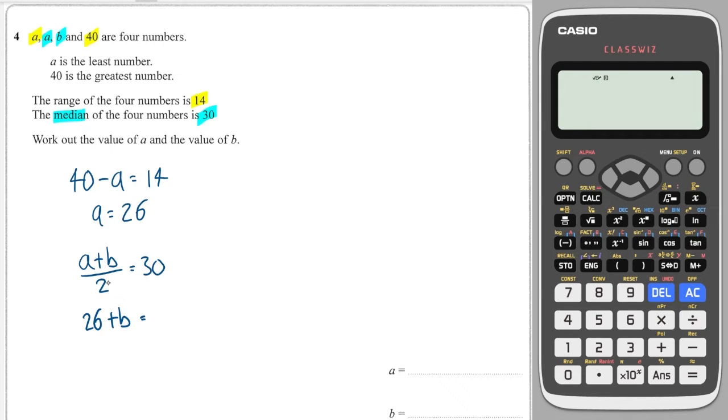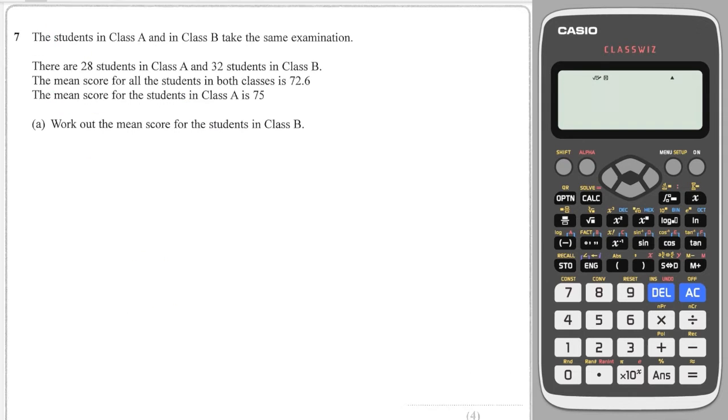So a, we know, is 26 plus b is equal to 2 times 30, which is 60, which means that b is equal to 34 and we're done. Okay, this is a classic question that comes up so frequently. You have Class A and Class B, and there are 28 students in Class A and 32 in Class B. The mean score of all the students in both classes is 72.6.